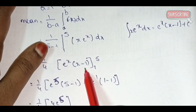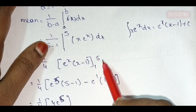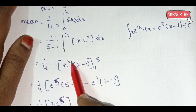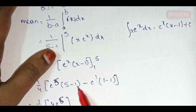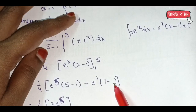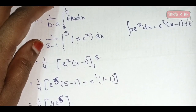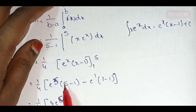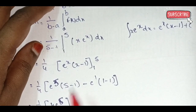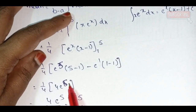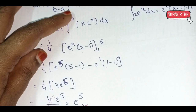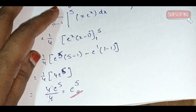Apply upper and lower limits: 1/4 × [eˣ(x − 1)] from 1 to 5. Upper limit x = 5: e⁵(5 − 1) = 4e⁵. Lower limit x = 1: e¹(1 − 1) = 0. So 1/4 × 4e⁵, the 4s cancel, giving the mean value = e⁵.